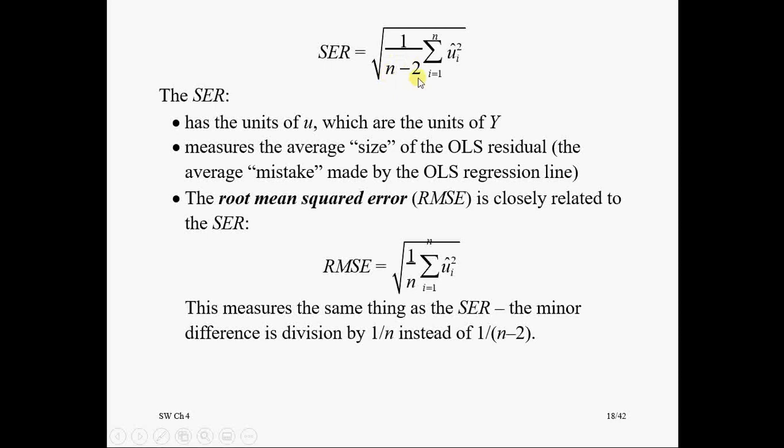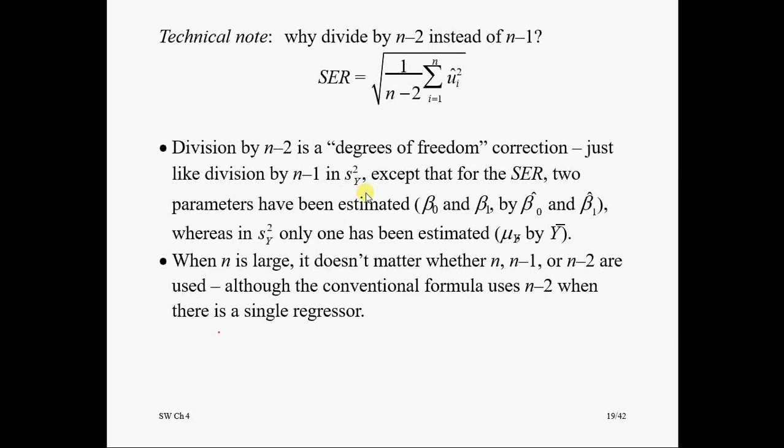The difference is here you have n minus 2, here you have n. If n is large, then it doesn't make any difference. It does not make much difference whether you use root mean square error or you use standard error of regression, because n minus 2 will be so close to n that this divisor will remain more or less same to each other. So there will be not much difference between the values of standard error of regression and root mean square error. I have already explained why you need to divide it by n minus 2 instead of n minus 1, and what is the difference between root mean square error and the standard error of the regression.